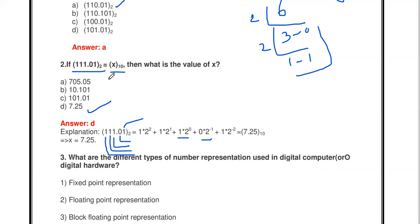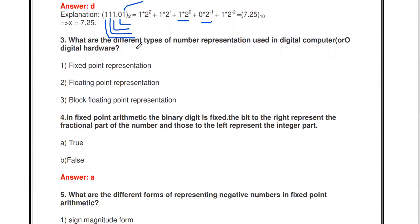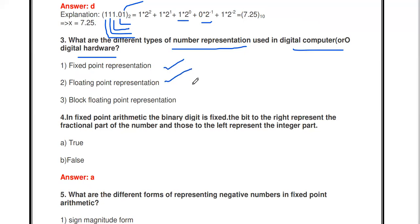The next question: what are the different types of number representation used in a digital computer or digital hardware? There are three methods: fixed point representation, floating point representation, and block floating point representation. These are the three representations of numbers in a digital computer or digital hardware.